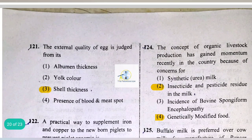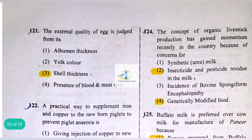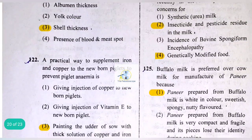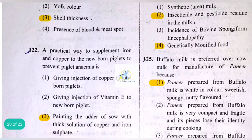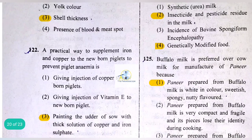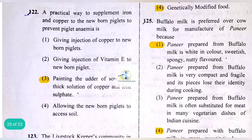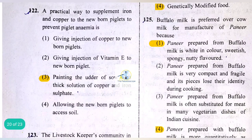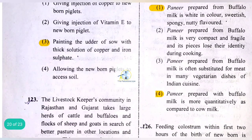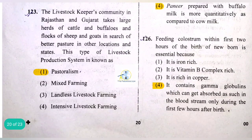A practical way to supplement iron and copper to newborn piglets to prevent piglet anemia is painting the udder of the sow with a thick solution of copper sulfate and iron sulfate. This is a very common and easy technique.